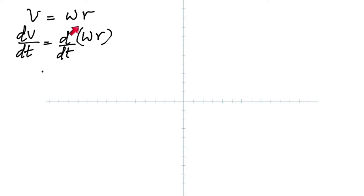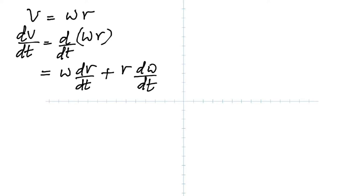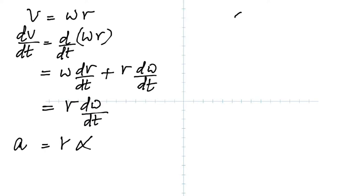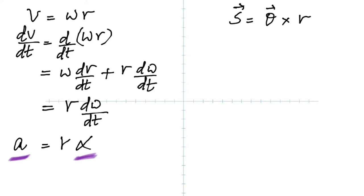It's a product function. Using the product rule: keep omega constant, take dR/dt, plus keep R constant, take dω/dt. But dR/dt is zero. Therefore dV/dt — acceleration — equals R times (dω/dt), which is alpha. That's how we get: tangential acceleration equals R times alpha.